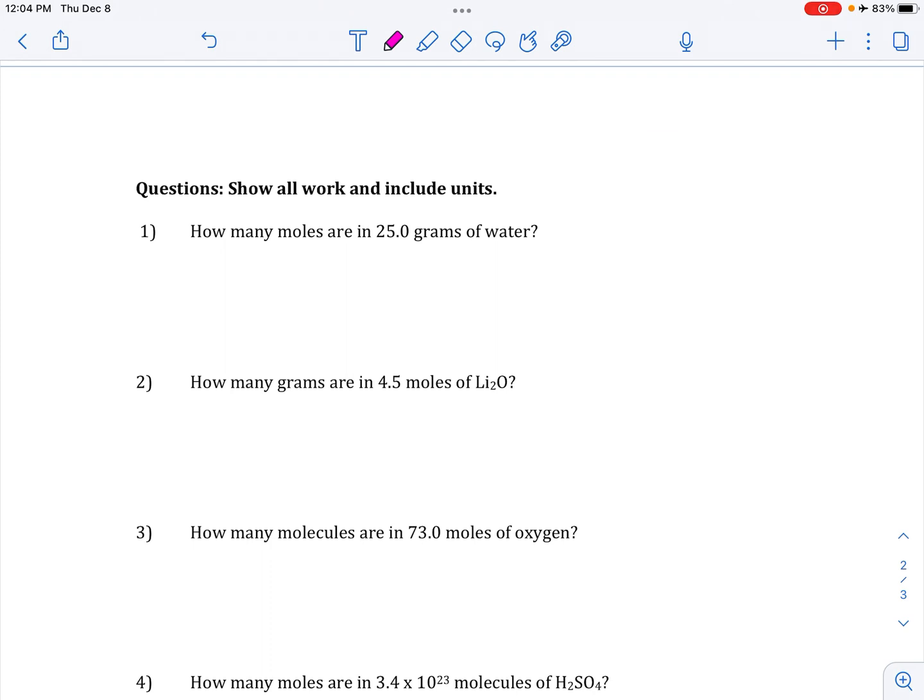Show all work and include units. So remember, going from moles to anything else, we multiply. If we come back to moles, we will divide. Show all work, include units. I'm not solving these for you, but I will guide you to the answer. How many moles are in 25.0 grams of water? So I start with 25.0 grams. So grams would be over here. To go back to moles, I must divide.